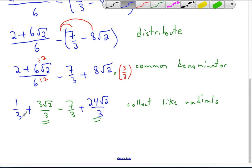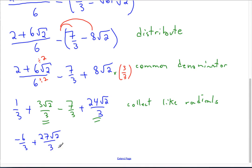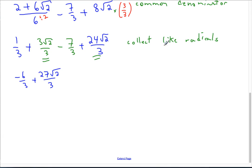Being careful, 1 third subtract 7 thirds is negative 6 thirds. And 3 root 2 over 3 add 24 root 2 over 3 - so 3 plus 24 is 27 root 2 over 3.